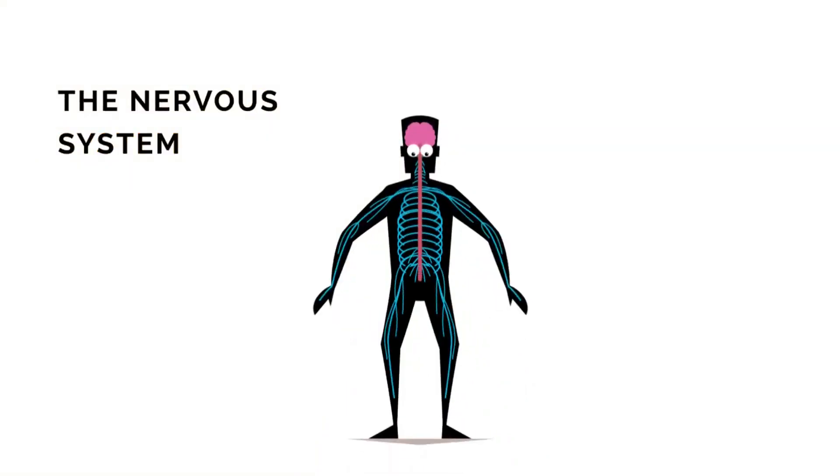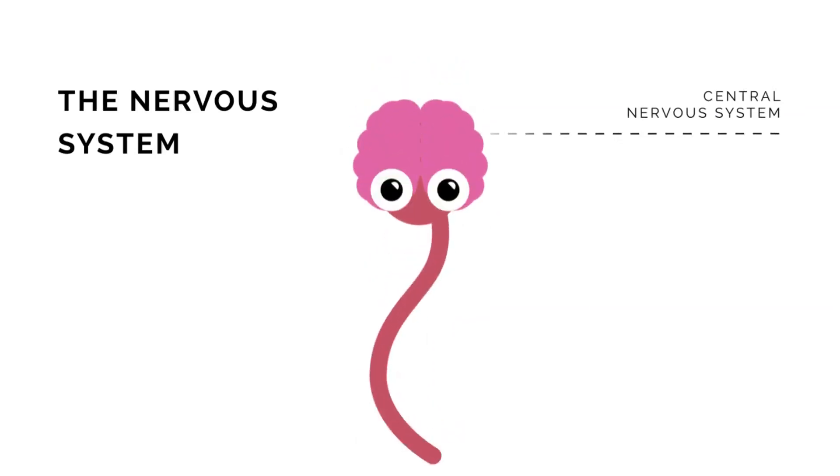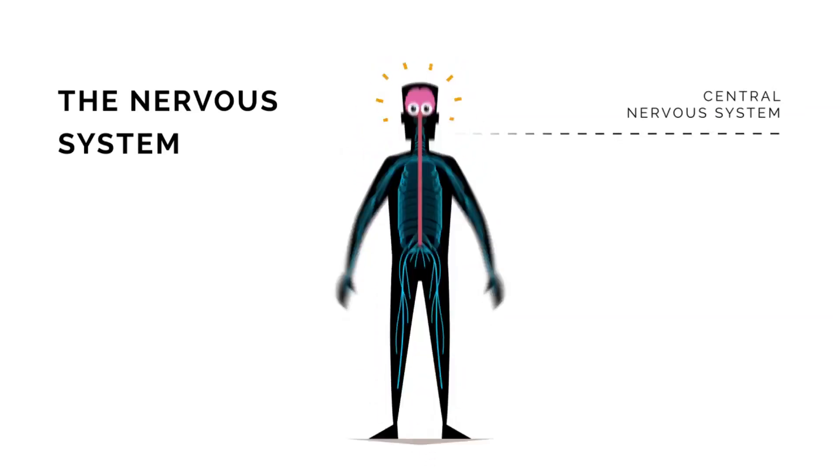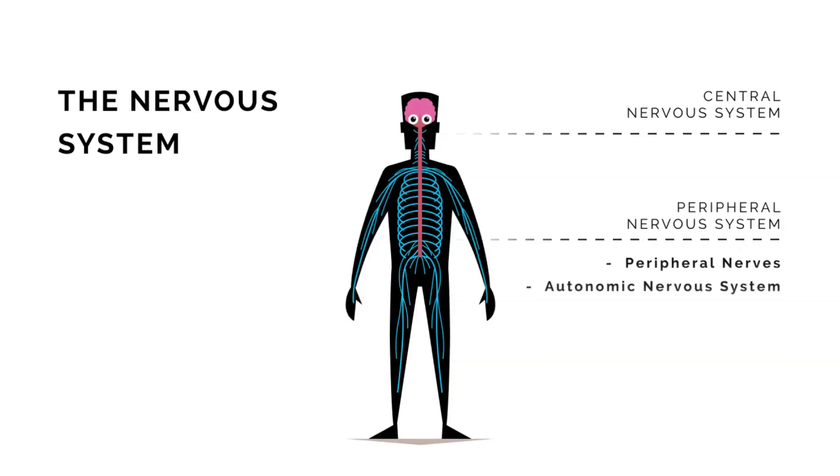You see, our nervous system, which controls decision-making and communication throughout the body, is made up of a central nervous system, the brain and spinal cord, and a peripheral nervous system, with peripheral nerves and the autonomic nervous system.